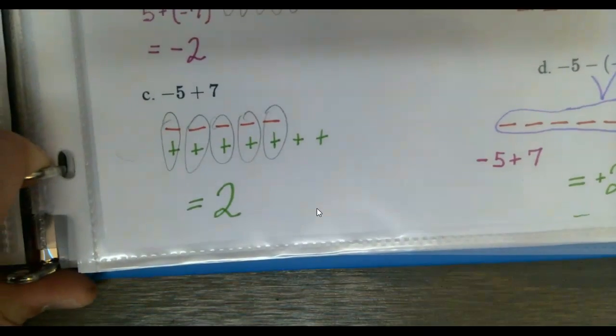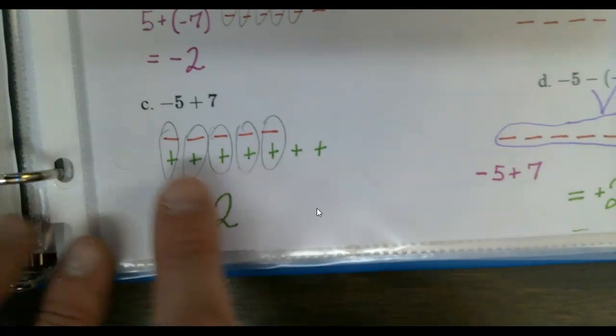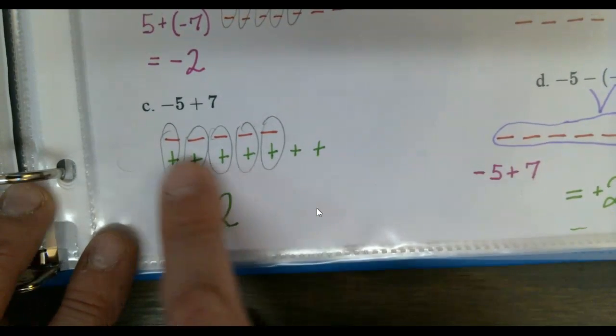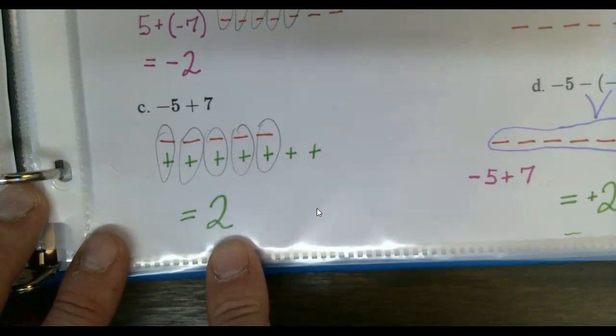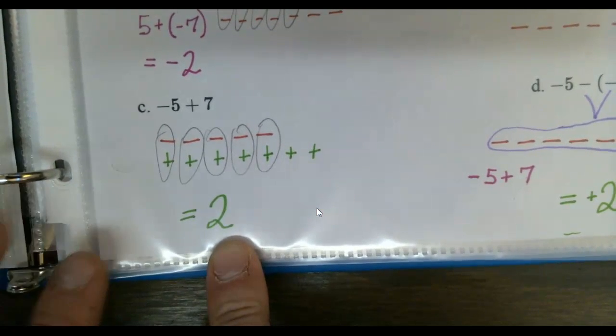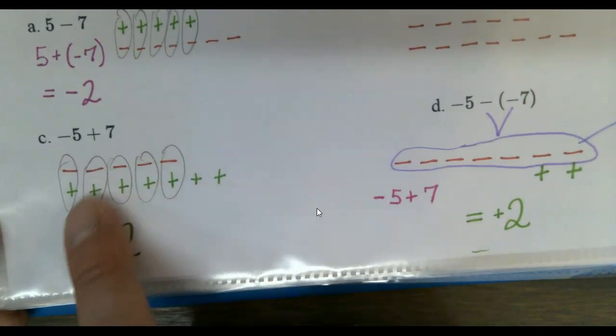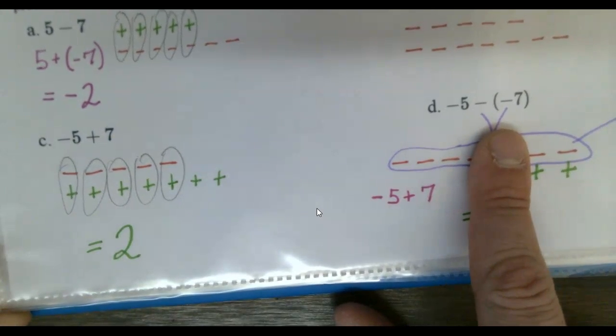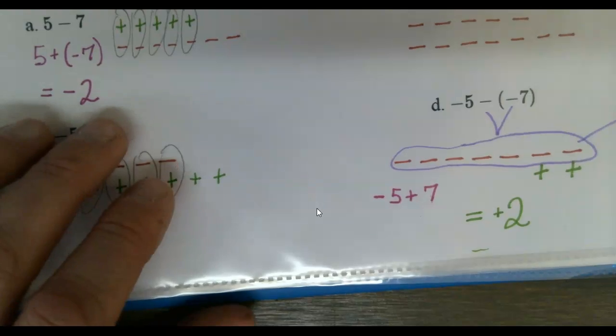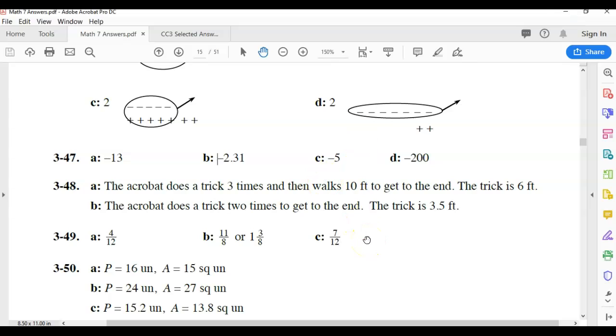So C was if you started with negative five and brought in seven positives. Well, I started with negative five and brought in seven positives. Cancel, cancel, cancel, cancel, cancel. Two extra. So C and D are actually the same thing. Except this one brings in seven good guys. This one takes away seven bad guys. But effectively, it does the same thing. All right. We need to get on to the lesson.